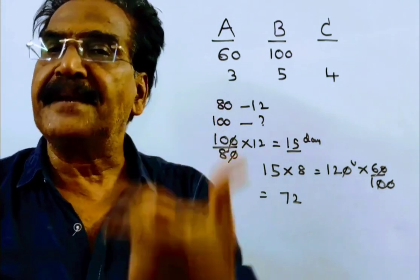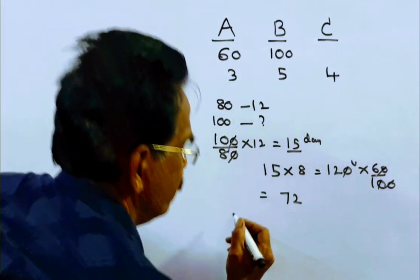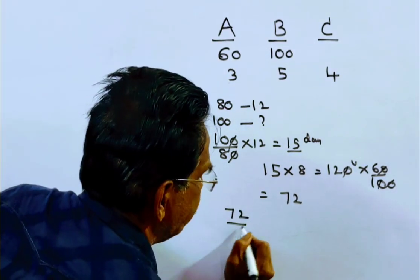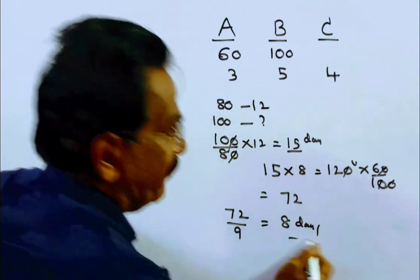So these 72 units can be done by B and C in 72 by 9, 8 days friends. 72 by 9, that is equal to 8 days. C is your answer friend.